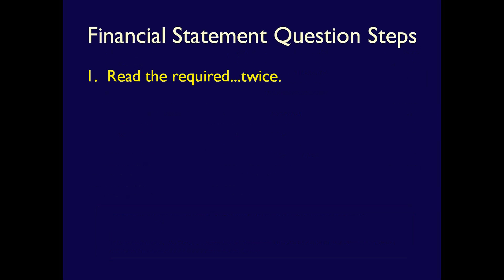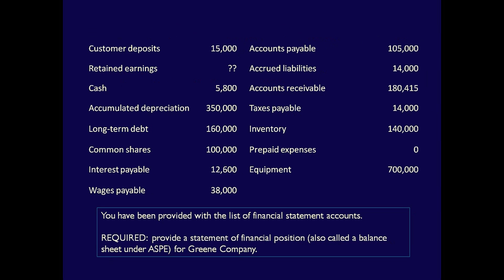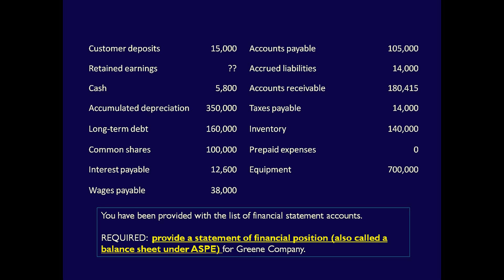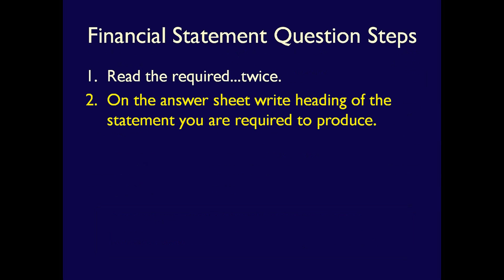Step 1: Read the required, and then read it again. You've been provided with a list of financial statement accounts. Required: provide a statement of financial position — also called a balance sheet under ASPE — for Green Company. Now read it again. Once you know which financial statement you have to produce, you can move on to step 2.